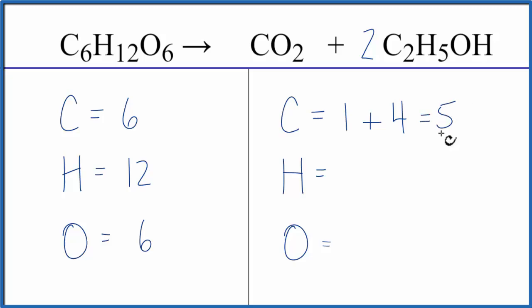so I have 5 carbons. Hydrogens, I have 2 times the 5, that gives me 10, plus 2 times this 1 over here. So that does balance the hydrogens. And then oxygens, I have 2 here, plus I have the 1 times the 2. So I have 4 oxygens.